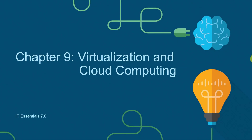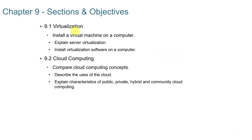This video series is to accompany the Cisco Netacad IT Essentials 7.0 course. This video is chapter 9, Virtualization and Cloud Computing. In chapter 9 we're going to look at virtualization, installing a virtual machine on a computer, explaining server virtualization and cloud computing, describing the uses of the cloud, and explaining characteristics of public, private, hybrid, and community cloud computing.